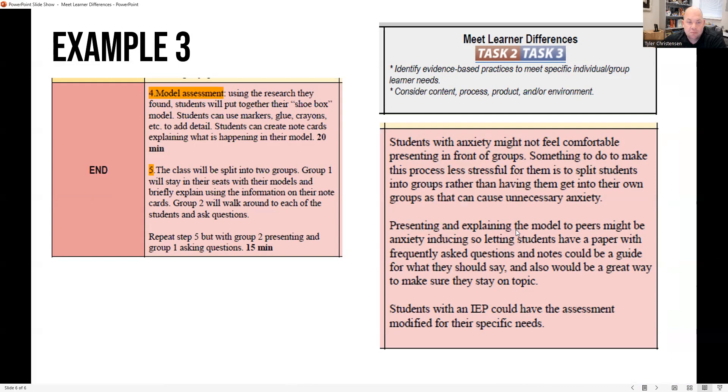Presenting and explaining the model to peers might be anxiety-inducing, so letting students have a paper with frequently asked questions and notes. And then students with an IEP could have an assessment modified. And that's where really this last one, we definitely would want in the third column. So students with an IEP would have a modified assessment, and we could add a few more details on how that would be modified. But simply saying they have the modified assessment is probably good enough.